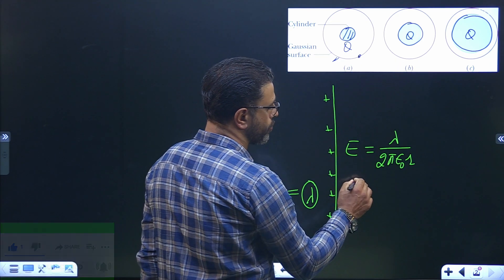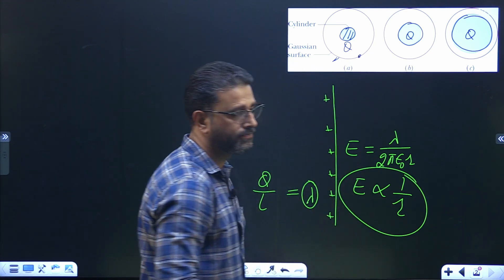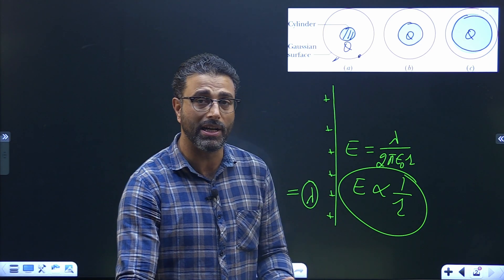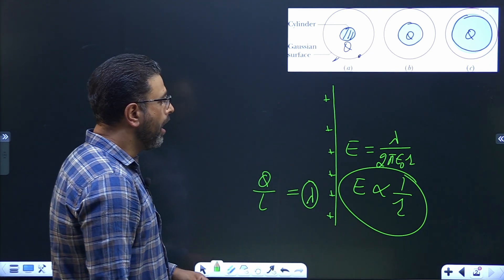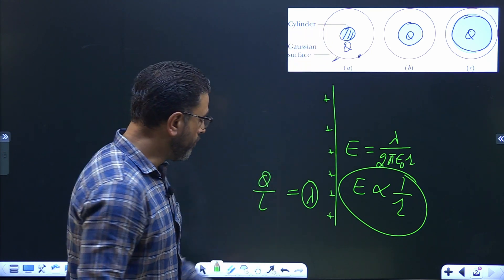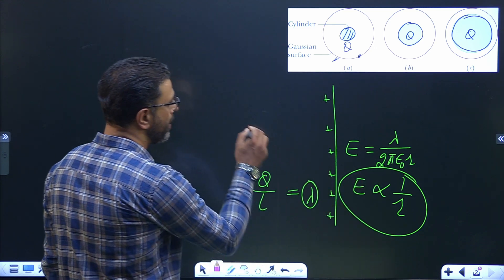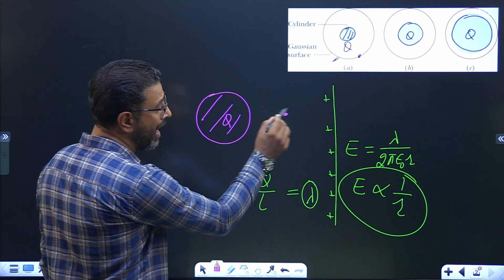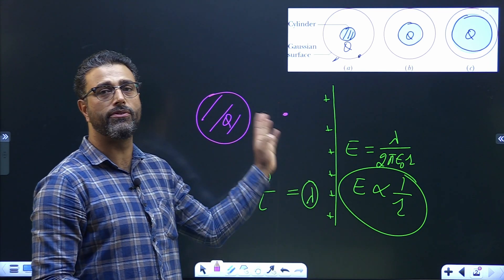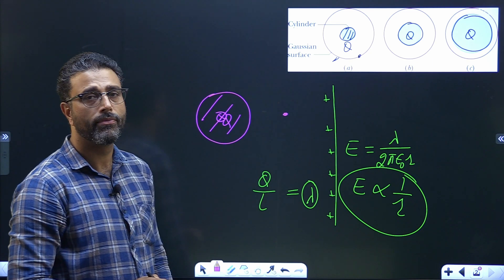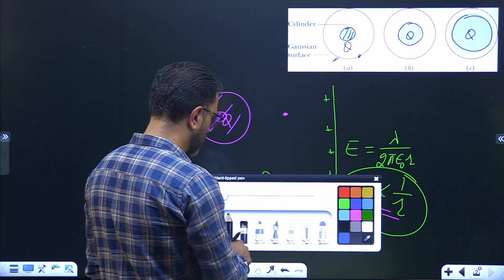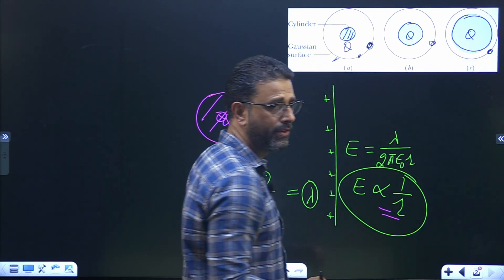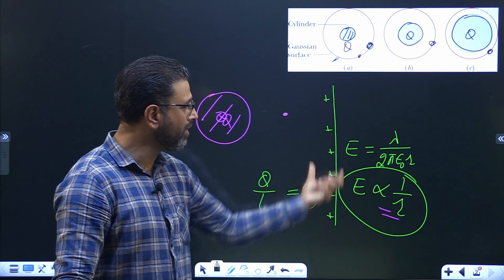If lambda is the same, then the electric field is inversely proportional to R. Greater the distance from the line charge, lesser will be the electric field; smaller the distance, greater will be the electric field. Now, we have a cylinder, not a line charge — but that again comes from Gauss's law. For a solid cylinder with charge Q, for points outside the solid cylinder, it just behaves as if it is a line charge along its axis. You can see all the Gaussian surfaces: each point is lying outside its respective cylinder. So for all of them, the same principle is valid — all of them behave like line charges along their axes.